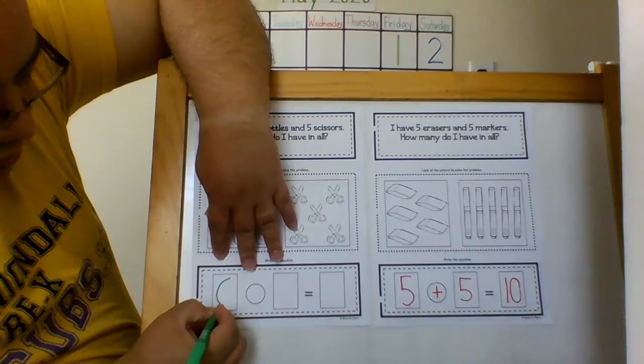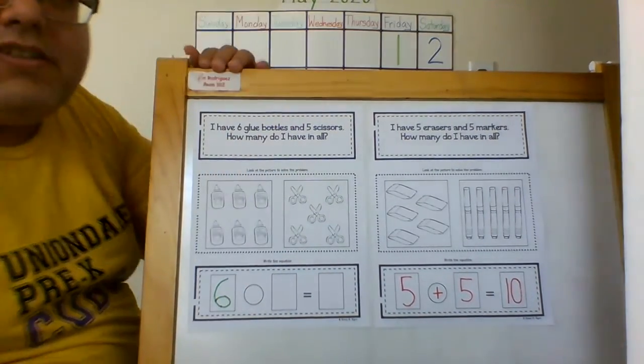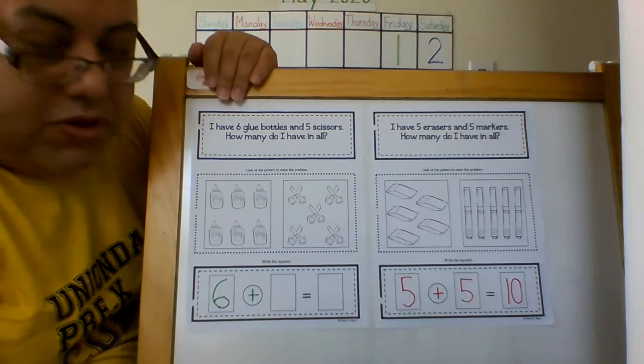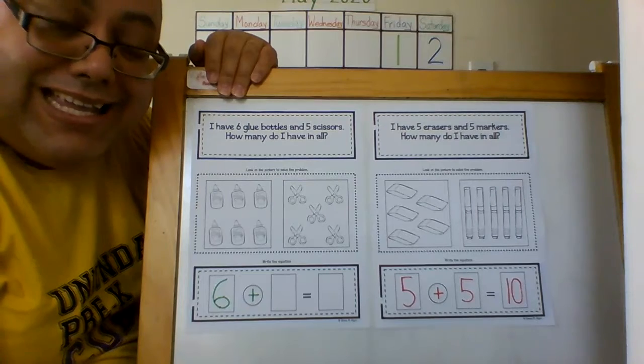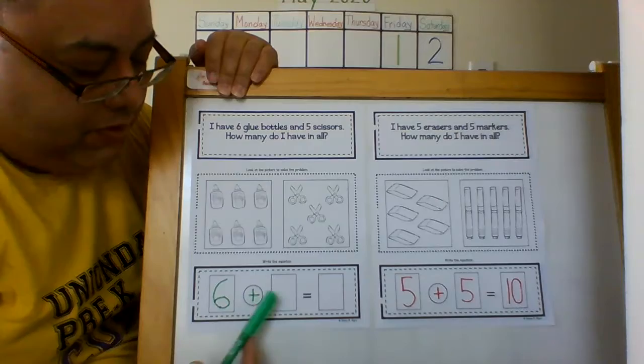around and around in a circle you go, that's a six just as you know. Now I'm going to write the plus sign because I'm putting them together. I'm adding, so that plus sign goes right there.